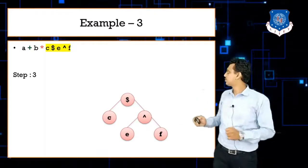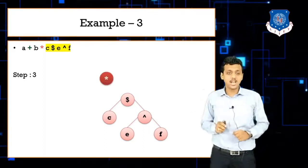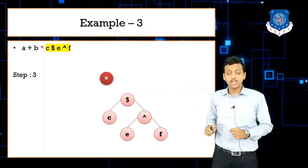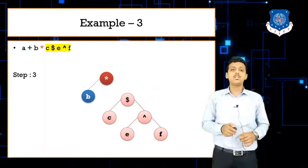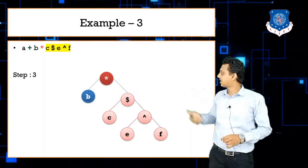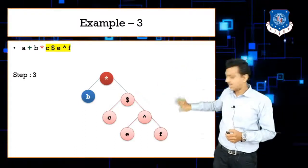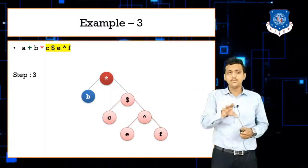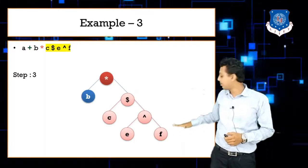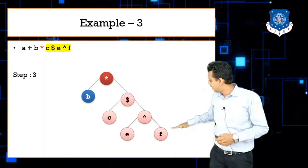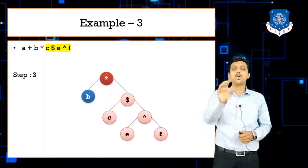Next, we solve star. Star is placed with b as its left child and the entire dollar sub-tree as its right child. Notice that the tree grows upward — always start drawing from the bottom of the page and work upward, since each new operator becomes a higher-level node.